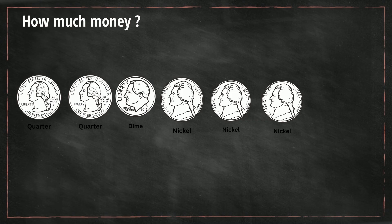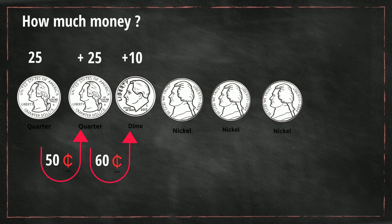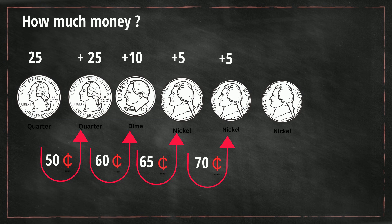We have 2 quarters — each quarter is 25 cents — so that equals 50. Then let's add a dime, so that makes it 60, because a dime is 10 cents. Then let's add a nickel which is 5, so that's 65. Another nickel and it becomes 70. And then a third nickel, it becomes 75 cents.